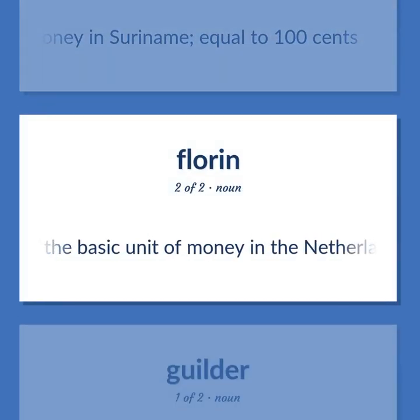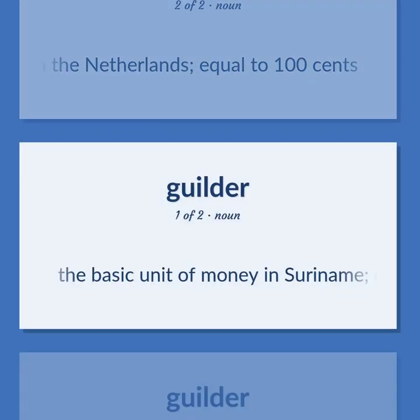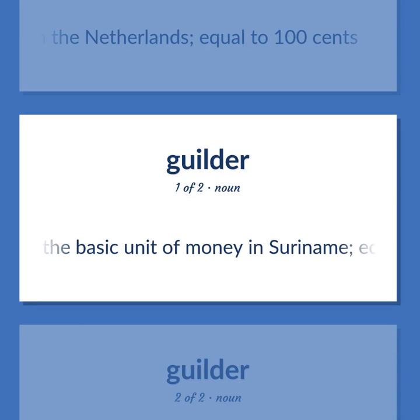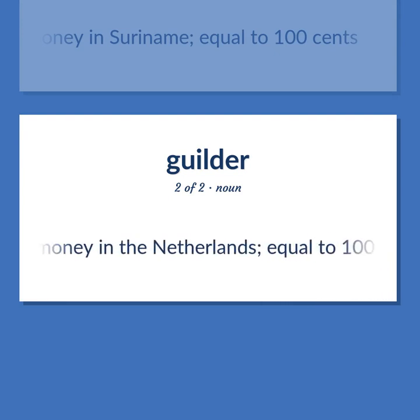Formerly the basic unit of money in the Netherlands, equal to 100 cents. The basic unit of money in Suriname, equal to 100 cents. Formerly the basic unit of money in the Netherlands, equal to 100 cents. Become our student and get access to effective and free educational materials. Subscribe to our YouTube channel to become a part of our growing YouTube community and to learn English effectively.